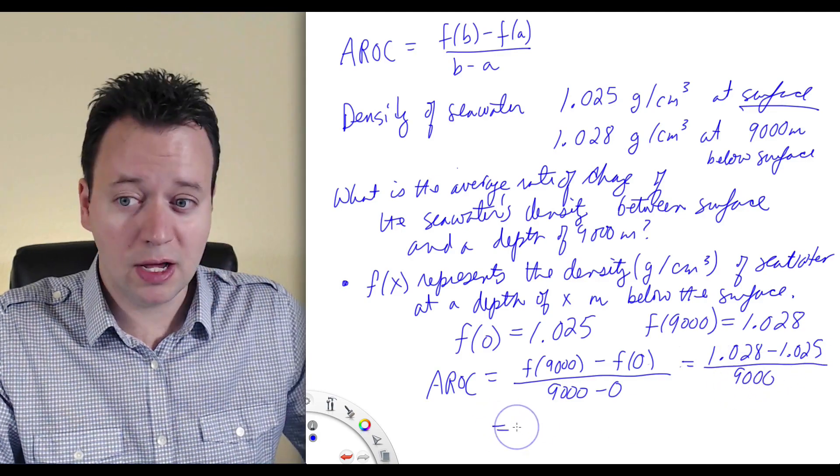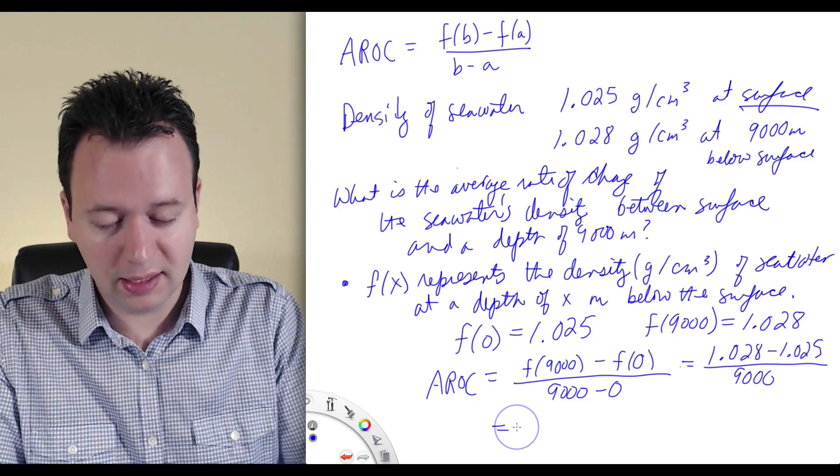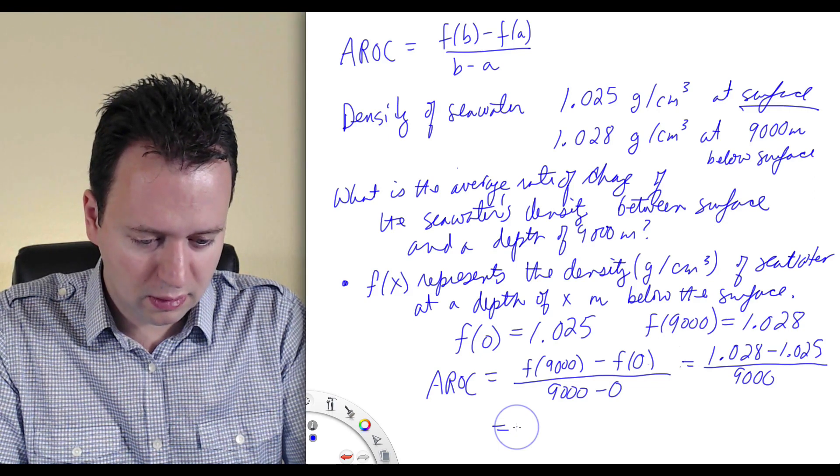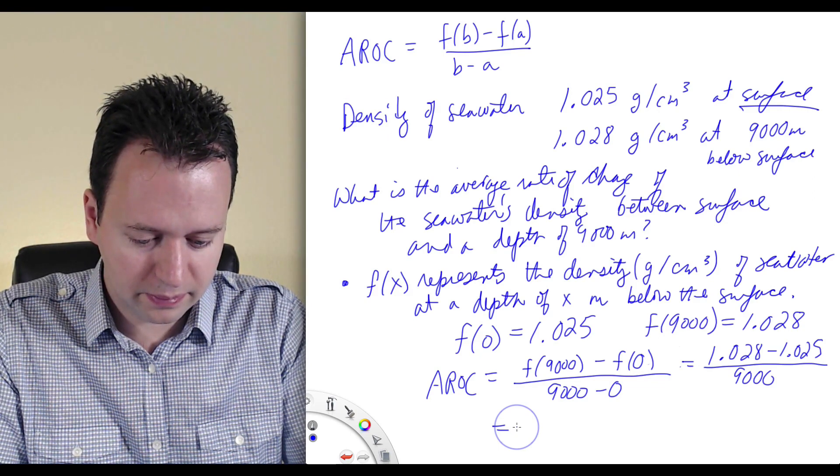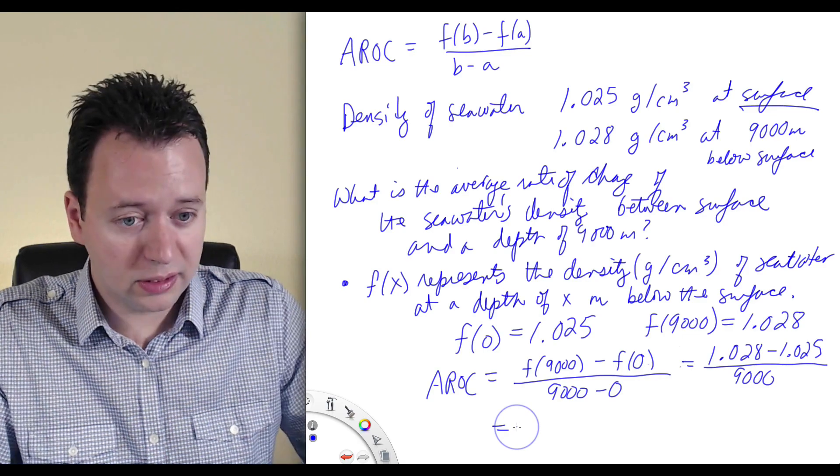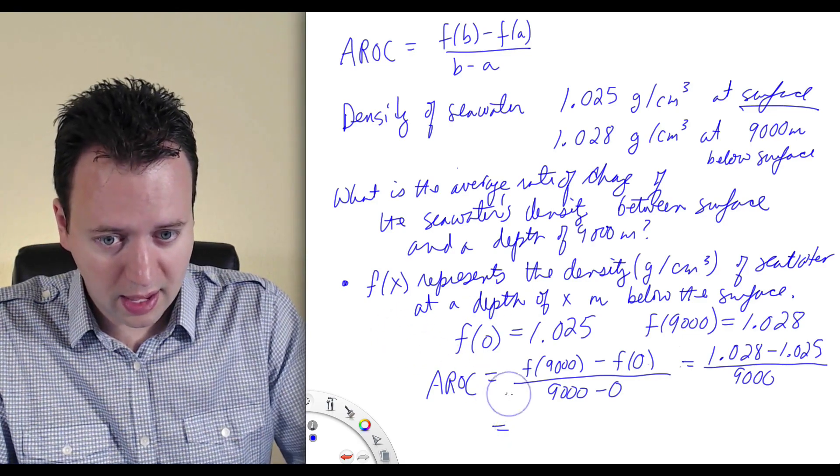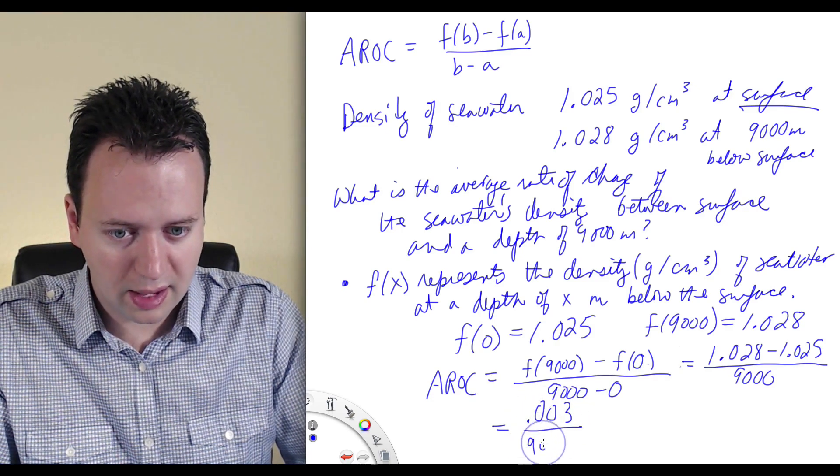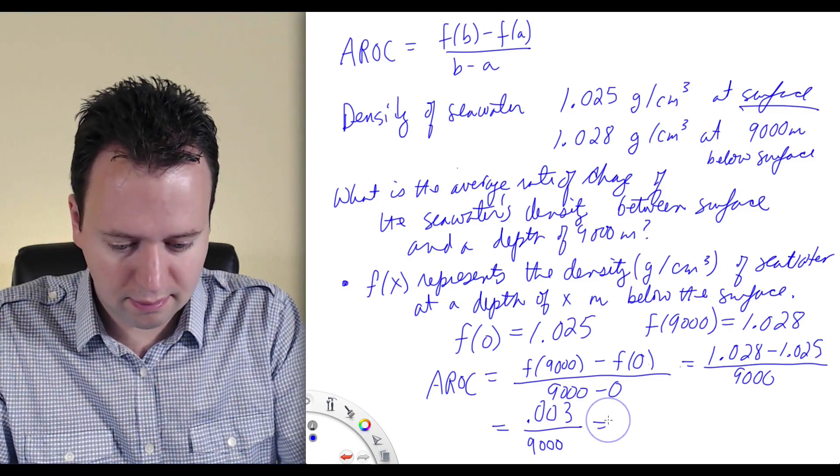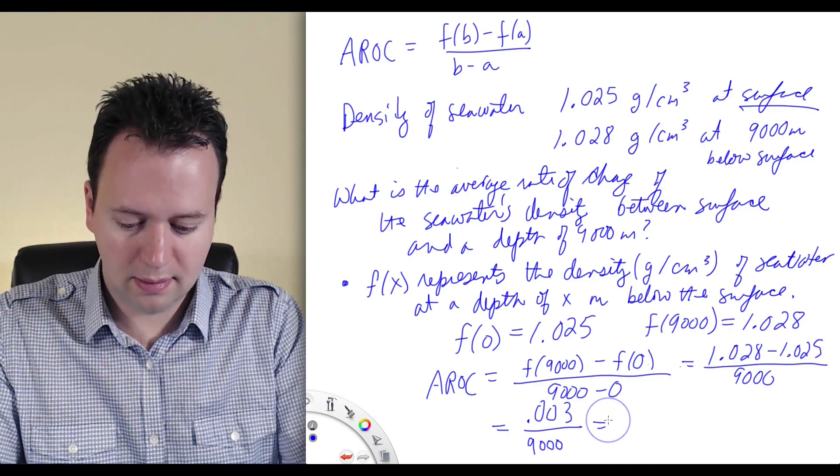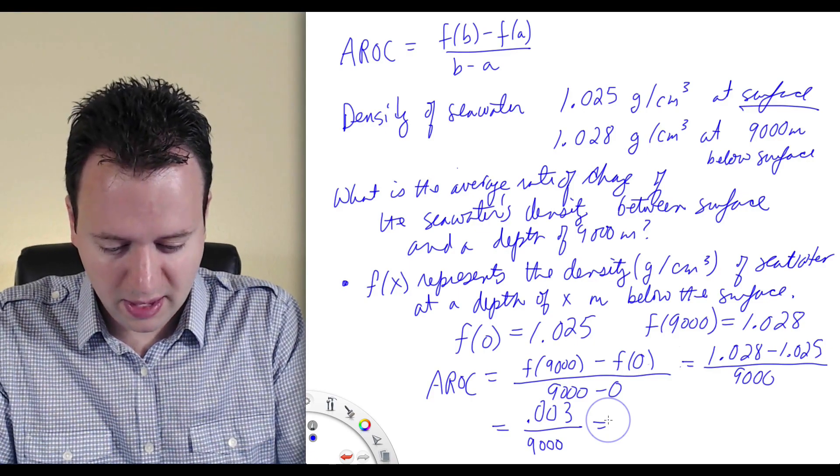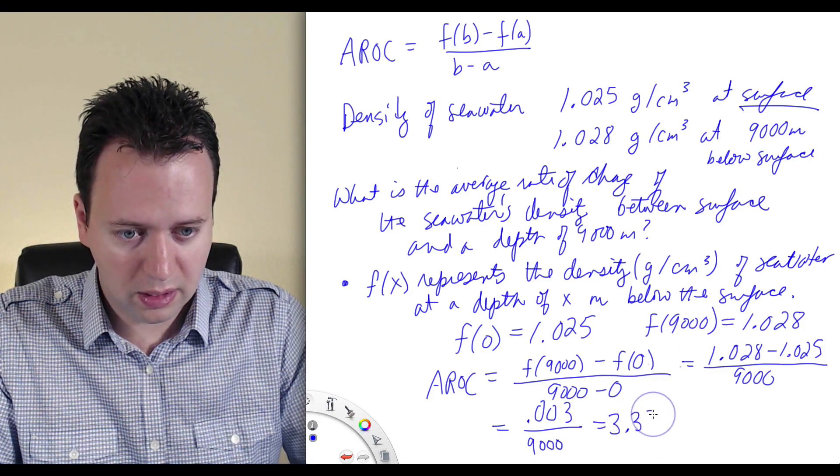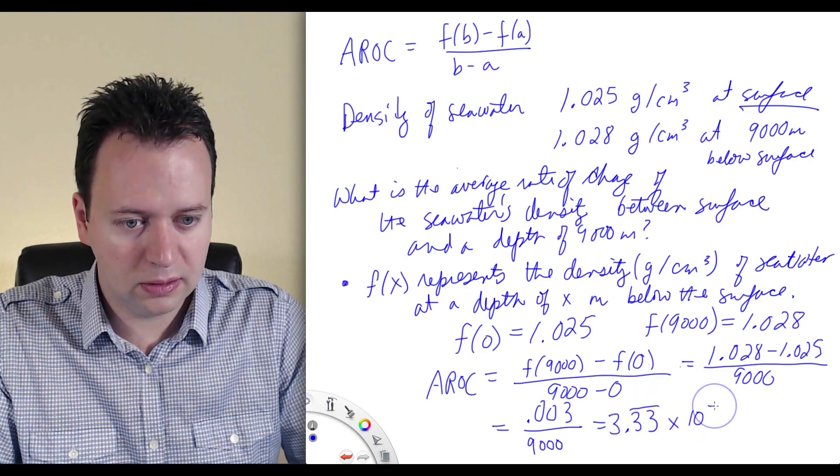So what is the average rate of change? Well, I'm going to take out my trusty TI-36X. 1.028 minus 1.025 divided by 9,000. Actually, just the difference is going to be, I should have done this in my head, but the difference is 0.003 over 9,000. And when I divide that out, I get a bunch of zeros. So I'm going to change it to scientific notation. 3.33 repeating times 10 to the minus 7.